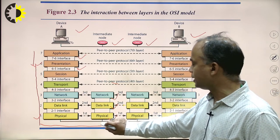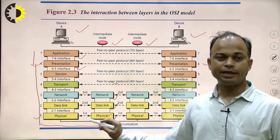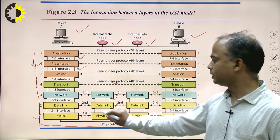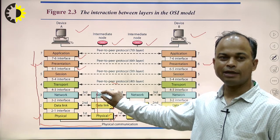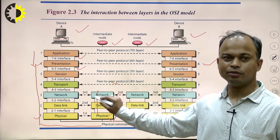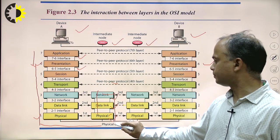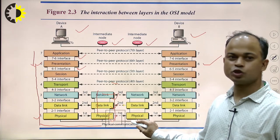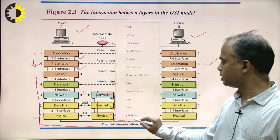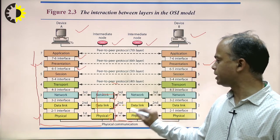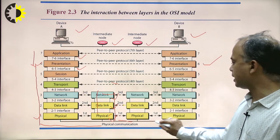After the data reaches the intermediate node, certain operations are performed at the physical layer, then at the data link layer, then at the network layer. After performing these operations, data comes once again to the physical layer and goes to the second intermediate node. At the second intermediate node, the same operations are performed: physical layer operations, data link operations, network layer operations — and finally data is received at the receiver.